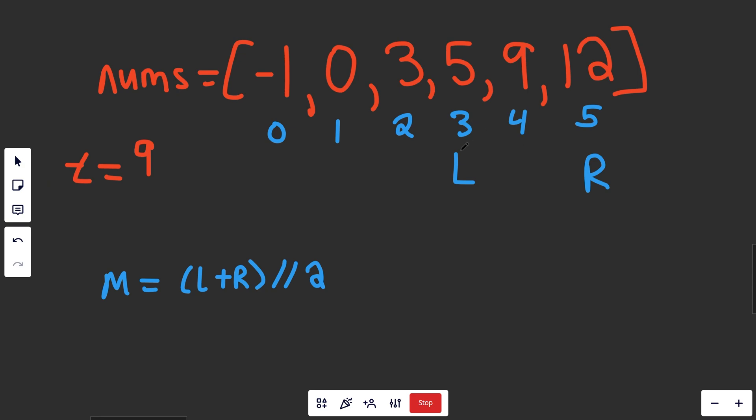Now we run it again. We say l is going to be three plus r, which is five. That's eight over two, which gives us four. So our middle will be the middle here at index four. We say is this value equal to the target? Yes, it is. Since we found the number, we would return the value of the index, which is the middle, return four. So if you find the value, you return the index.